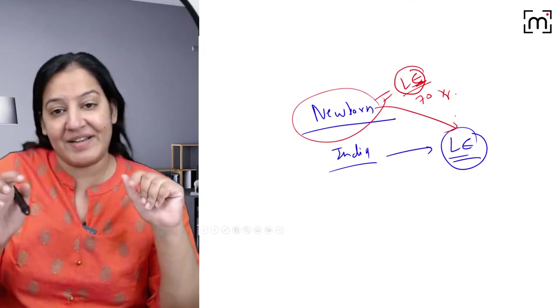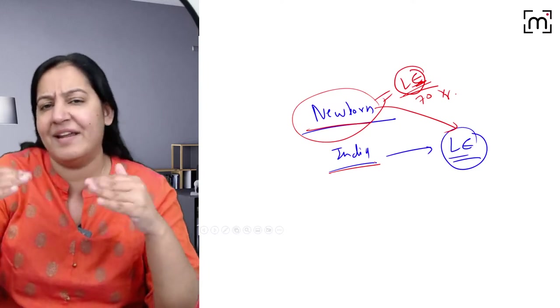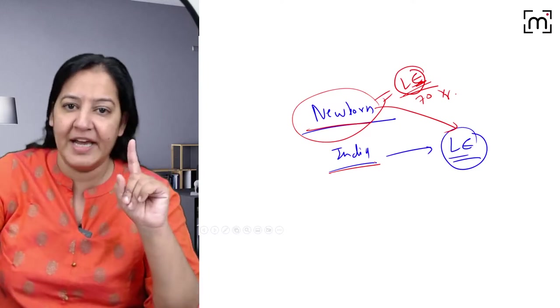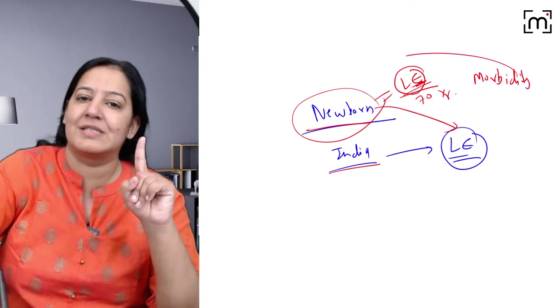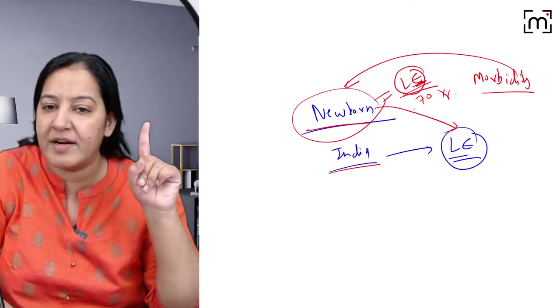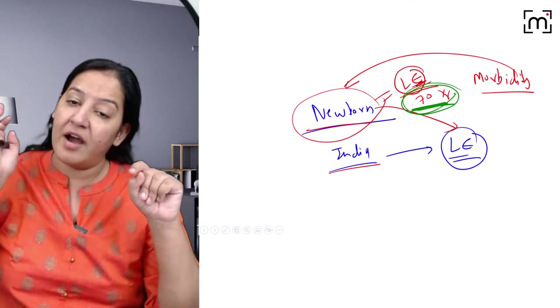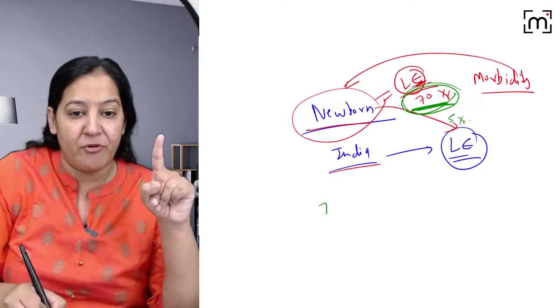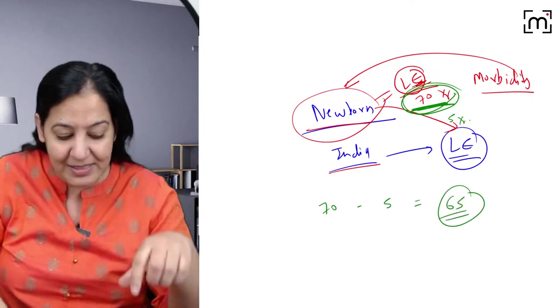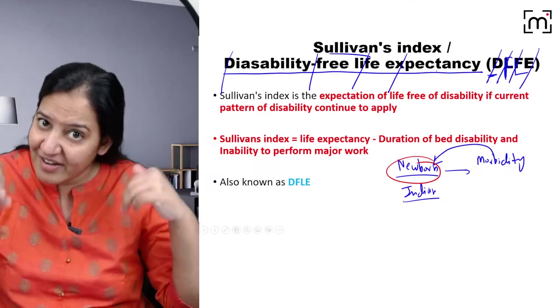Life expectancy is the total life we are expecting this newborn will live if they live in India only. Now I'm applying the current morbidity — not mortality — on this newborn. If the newborn is going to survive 70 years, out of those 70 years, how many years will they be diseased? Maybe five or ten years. So if I subtract 70 minus 5, that is 65 — that is the Disability Free Life Expectancy.